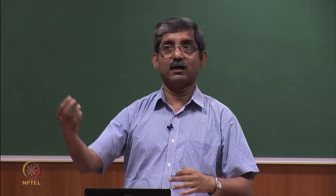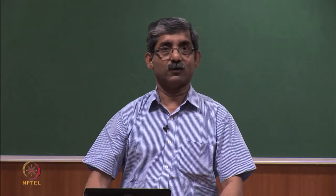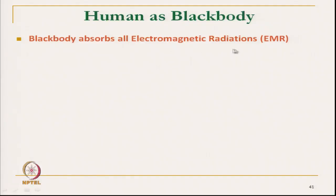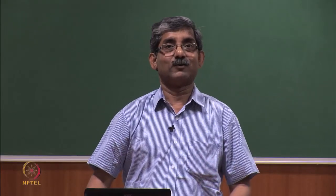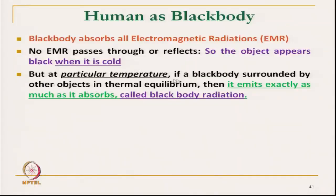The human body receives heat and does not reflect it back — it absorbs all electromagnetic radiation, which is the nature of a black body. So we can consider the human body as equivalent to a black body. No electromagnetic radiation passes through or is reflected. The object appears black when it is cold, which is why it is called a black body. As temperature increases, if the black body is surrounded by other objects in thermal equilibrium, it emits exactly as much as it absorbs — this is called black body radiation.